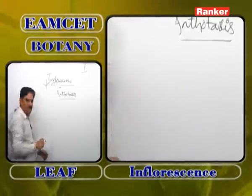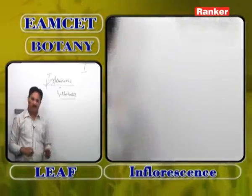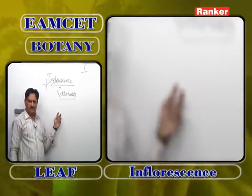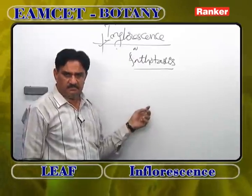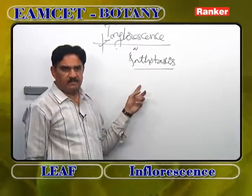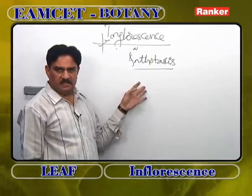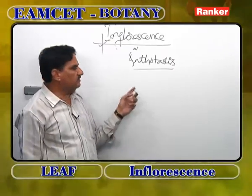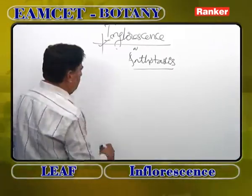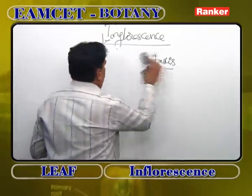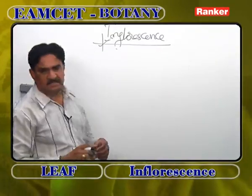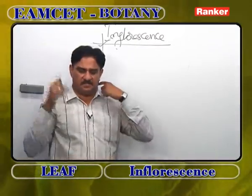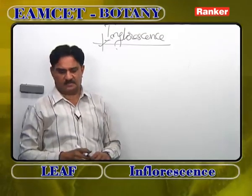In some plants, terminal inflorescence is present, meaning the stem always ends with an inflorescence. Terminal inflorescence is found in Croton and Crotalaria. In the case of Dolichos, axillary inflorescence is found. In the case of Callistemon, intercalary inflorescence is present — meaning the inflorescences are formed on the internodes and once formed, the growth of the stem continues.